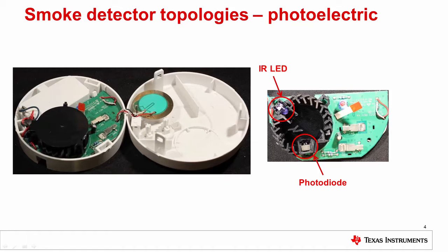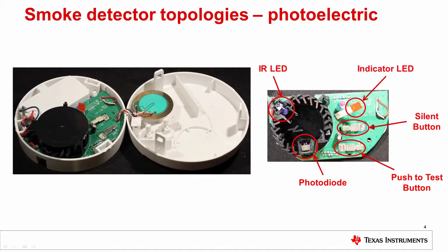Not only does this allow a precise measurement of the concentration of smoke in the air, but the system is also able to self-diagnose faulty sensors. Other components typically found in a smoke detector are user buttons to silence the alarm and perform periodic self-tests, an indicator LED which blinks periodically to let the user know the detector is still alive, and a piezo sounder to provide a very loud audible notification of an alarm condition.